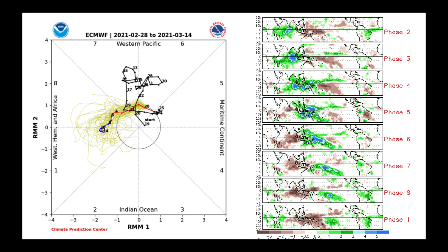Is there teleconnection support for that pattern? We see that the MJO is in phase 6, and it will likely be moving through phase 7 and into phase 8. Phase 8 tends to be wetter in eastern Brazil through Brazil's central and northern growing areas, and drier to the south. So that's certainly supportive of the pattern we described over the next two weeks.